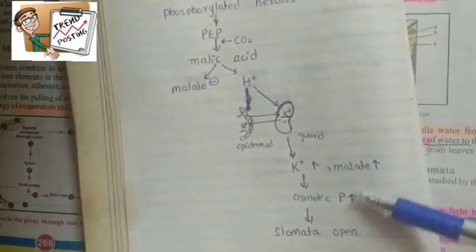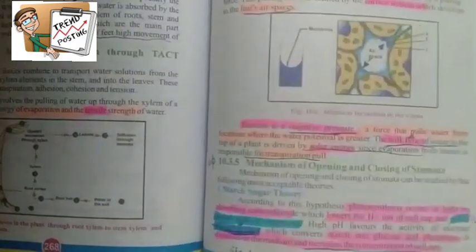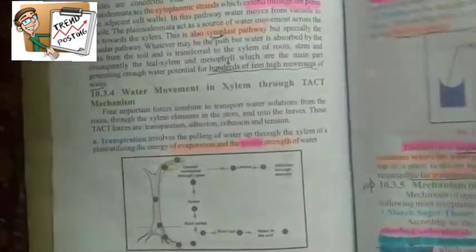Potassium and malate ion concentration will increase, which will increase osmotic pressure, and stomata will open. So build flow charts when you read them.